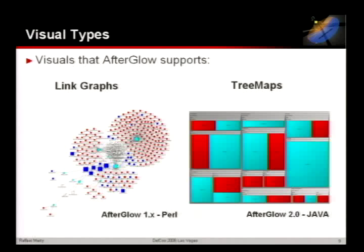What I'm going to look at for graphs today — I don't want to cover all the different types, just two: link graphs and tree maps. Link graphs are basically a couple of nodes connected to each other showing a certain relationship. Tree maps look a little complicated at first, but I want to introduce them and show exactly what they are.